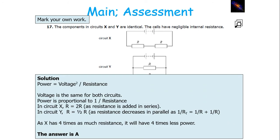We know that power equals voltage squared over R. The voltage is the same for both circuits, so power must be proportional to 1 over resistance, since the voltage squared term is the same for both. In circuit X, the resistors are in series, so resistance becomes 2R. In Y, the resistors are in parallel, so using 1 over RT equals 1 over R1 plus 1 over R2, it works out to be half R. So X has 4 times as much resistance as Y, meaning X will have 4 times less power.